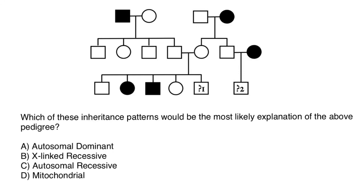Hello and welcome to Nikolai's Genetics Lessons. Today I have prepared three multiple choice questions for you, and all of them are based on the same pedigree. So even if you know the answer to the first question, wait for the other two questions as well. So here's the pedigree, and here's the question: which of these inheritance patterns would be the most likely explanation of the above pedigree?